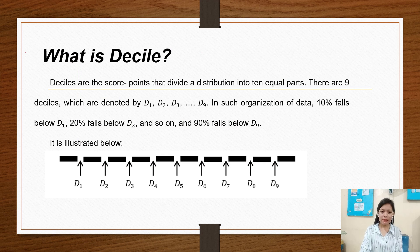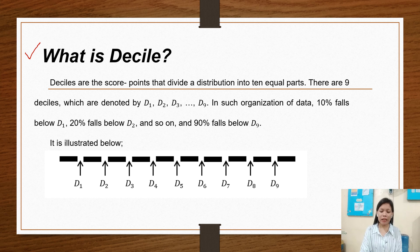So what is decile? Deciles are the score points that divide a distribution into 10 equal parts. There are 9 deciles which are denoted by D1, D2, D3, D4, D5, D6, D7, D8, and D9.